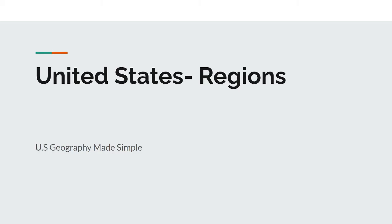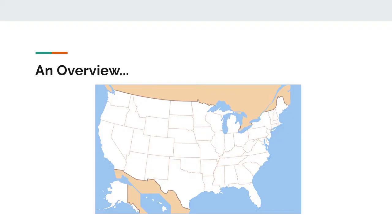Hey guys, I'm Raymond from US Geography Made Simple and in this video I'll give you a brief overview on the regions of the United States. The US is a huge country — it has almost 3.8 million square miles of land, 95,000 miles of shoreline, and 9 time zones. This being said, it would be very difficult to learn everything all at once, so to make learning geography simpler we'll be breaking it up into regions.